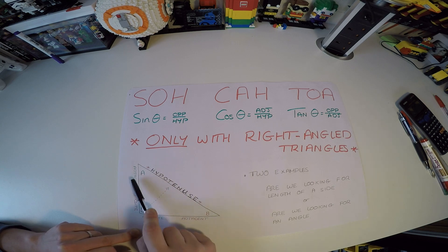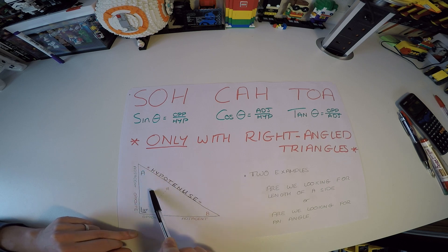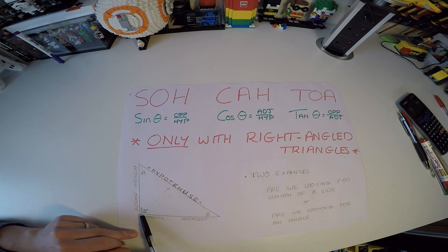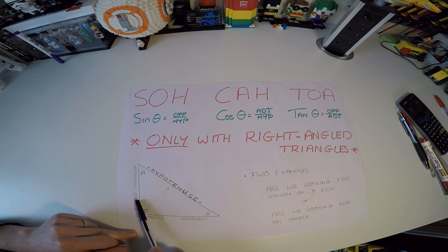But these are interchangeable as adjacent and opposite sides depending on what angle you're using. So I've tried to use colors to help clarify it here. If I'm using the angle A here, the opposite side is the side literally opposite it, which is this side down here. And the adjacent side is the side attached to it. If I'm using angle B, the opposite side, again, is now over here, and the adjacent side is the side attached to it.